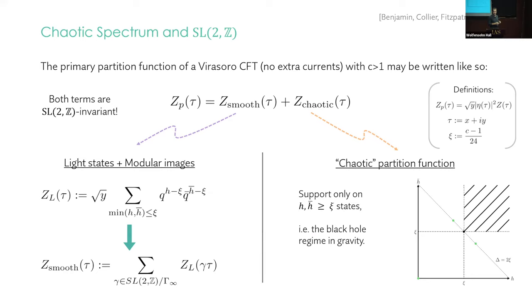The partition function can be written as a sum of two pieces, they're both modular invariant, and I'm going to call these Z_smooth and Z_chaotic, but we'll back off from that and try to argue or prove that this really is the right characterization.